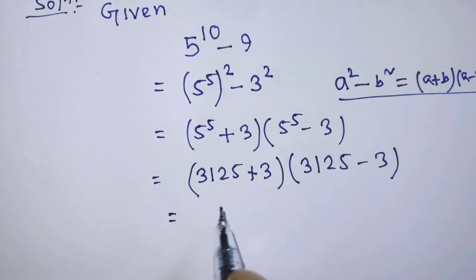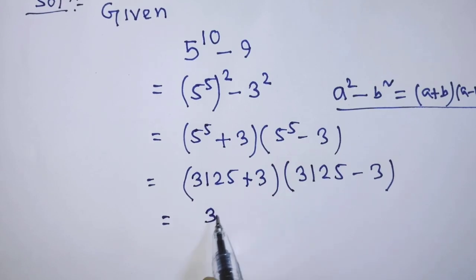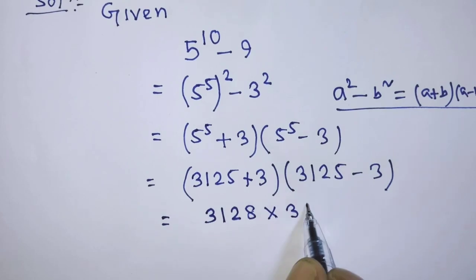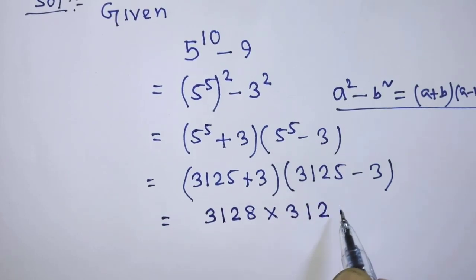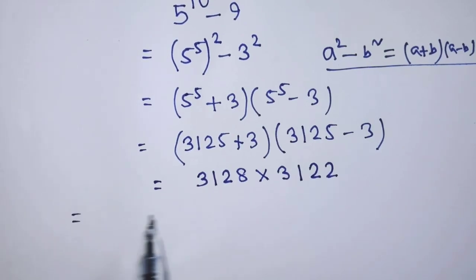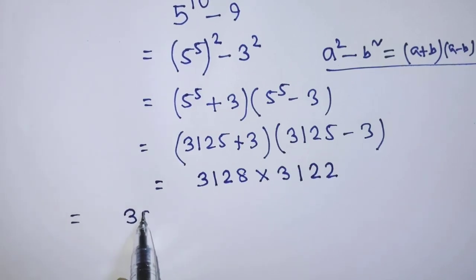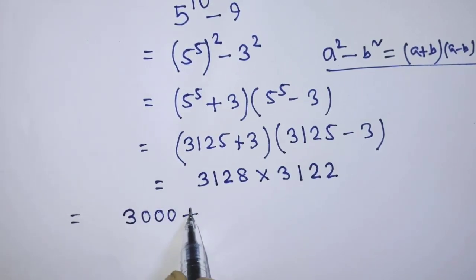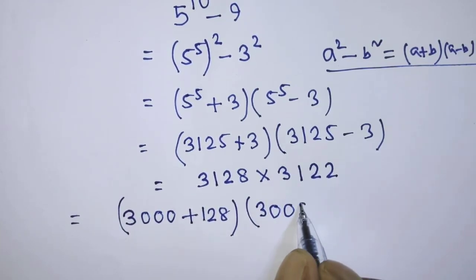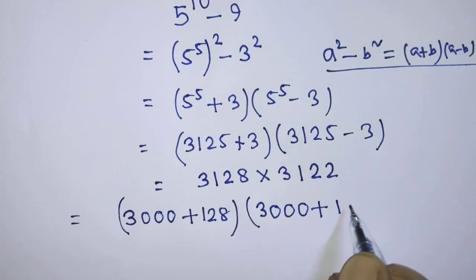After that, it will be 3128 times 3122. In the place of 3128, we can write 3000 plus 128 times, similarly, it will be 3000 plus 122.